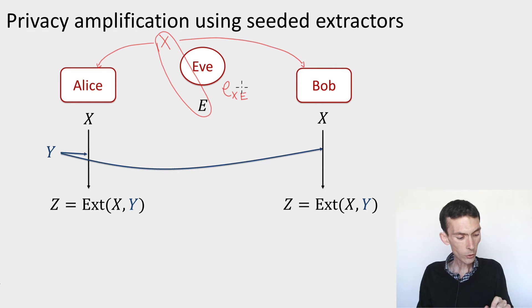And in privacy amplification, the goal is for Alice and Bob to amplify this weak secret coming up with a shared uniformly random string R. Here's how they can do it if they have access to an extractor. What Alice will do is that she'll generate a uniform seed in her lab Y. And here it's important that this seed is uniform and independent from the eavesdropper.